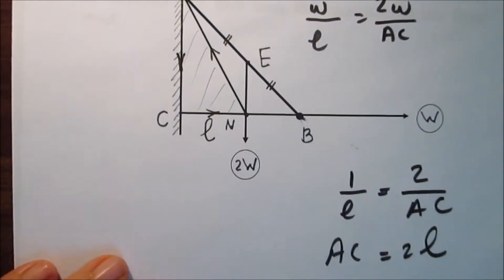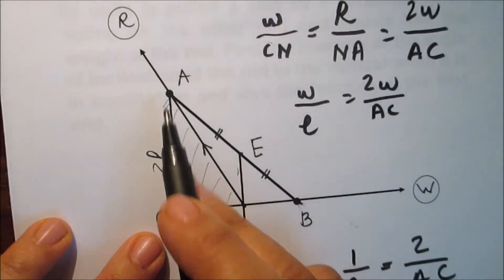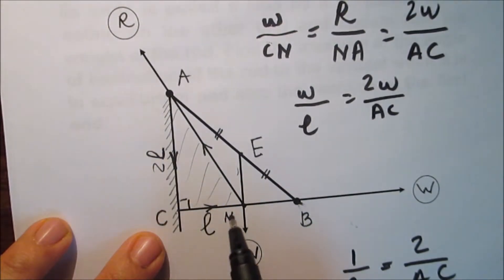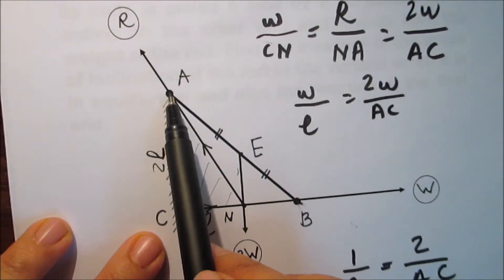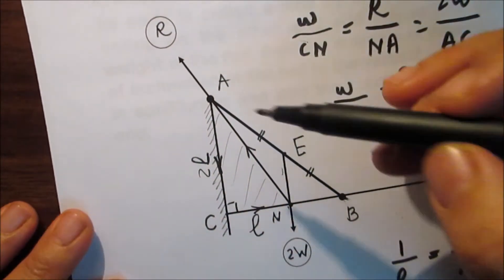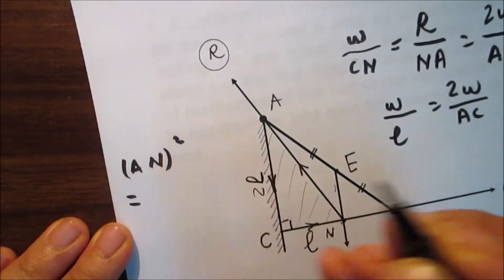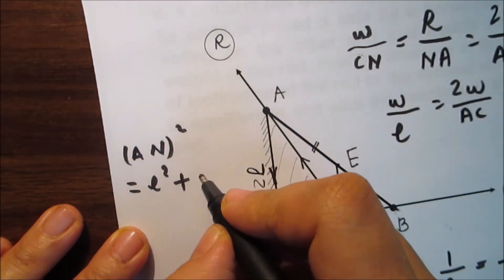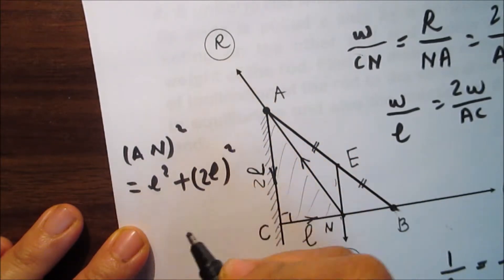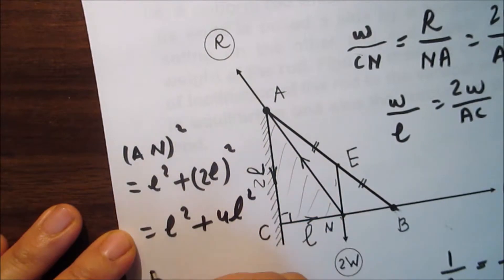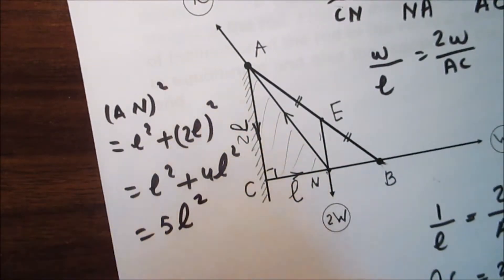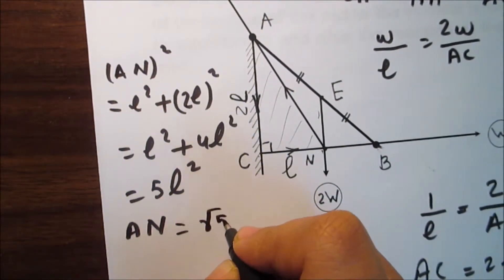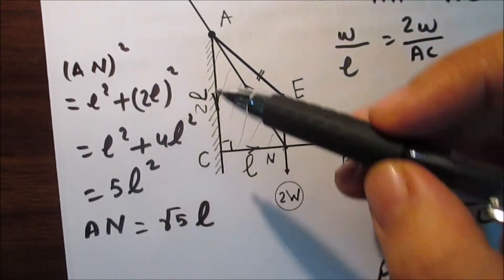So AC equals 2l. Triangle ACN is a right triangle at C, with CN = l and AC = 2l. Using the Pythagorean theorem: AN² = CN² + AC² = l² + (2l)² = l² + 4l² = 5l². Taking the square root of both sides, AN equals √5 · l. Now we know AN in terms of l.